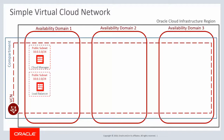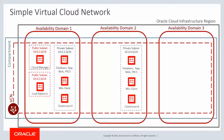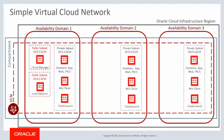In the same Availability Domain is a load balancer, which resides in a different public subnet. The PeopleSoft database, mid-tier, PeopleTools client, and Elasticsearch server components reside in a private subnet in Availability Domain 1. Availability Domains 2 and 3 have additional instances of the PeopleSoft components, which reside in private subnets. This completes our discussion of the Support for Deployments on Oracle Cloud Infrastructure feature.